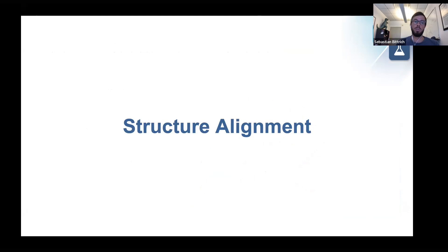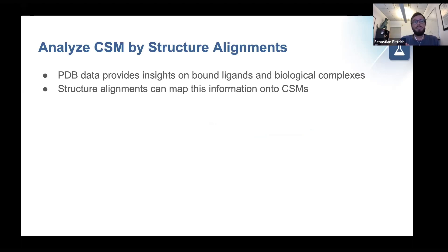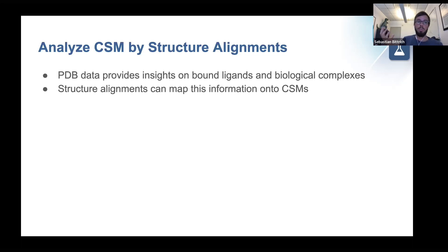I want to show you how to create your own structure alignment — how to recreate this view where you visualize one computed structure model and two PDB structures, comparing them by structurally aligning them. PDB structures are really rich in information. As we heard in various talks, oftentimes you can see ligands present in PDB structures, which is never the case for computed structure models. You can also see PDB structures in more complex scenarios where they interact with other proteins or form biological assemblies — a lot of information present as coordinates deposited in a PDB structure, which is not the case for computed structure models.